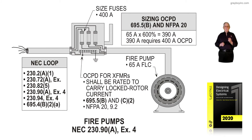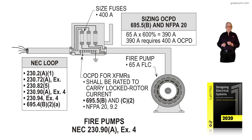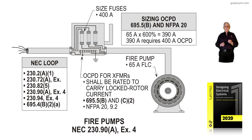It is highly suggested that you review the NEC loop sections. 230.2A1 allows another service in addition to the normal service for a fire pump. 230.72A exception says you don't have to group it either. And in 230.82, item 5 says you can tap ahead of a main that is considered reliable service if the authority having jurisdiction gives you permission to do so.